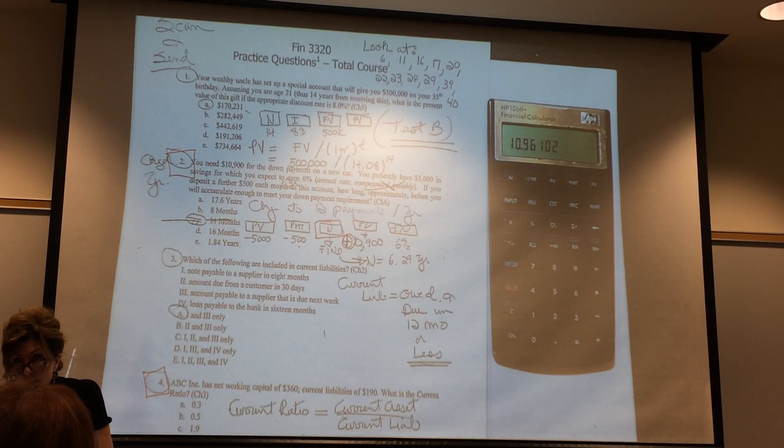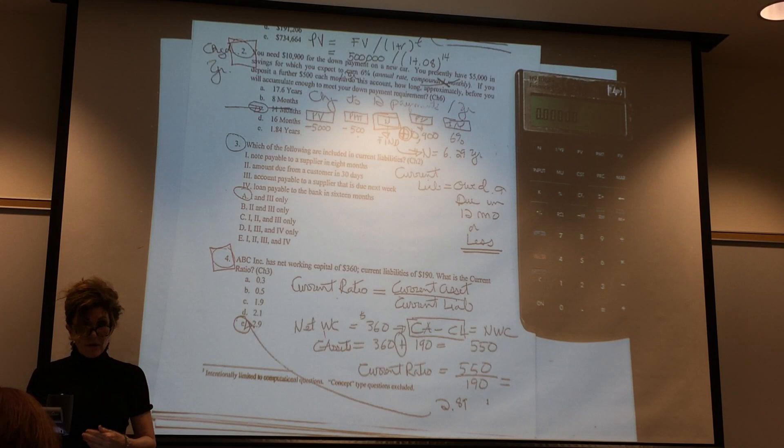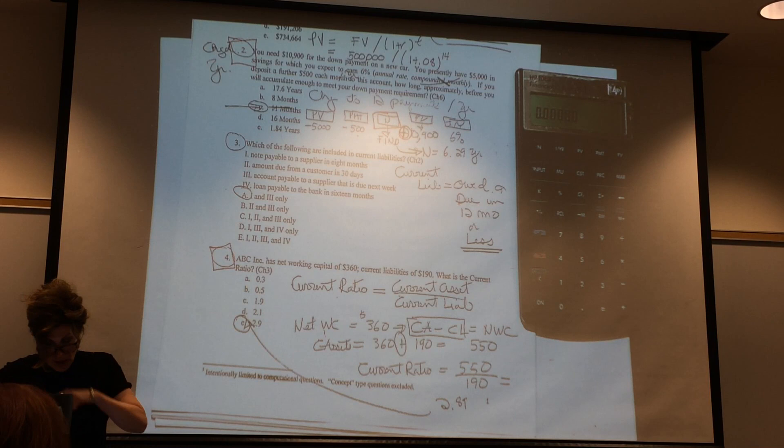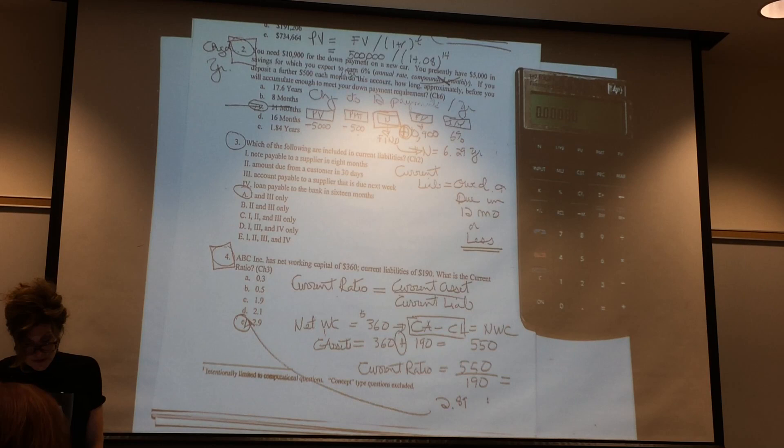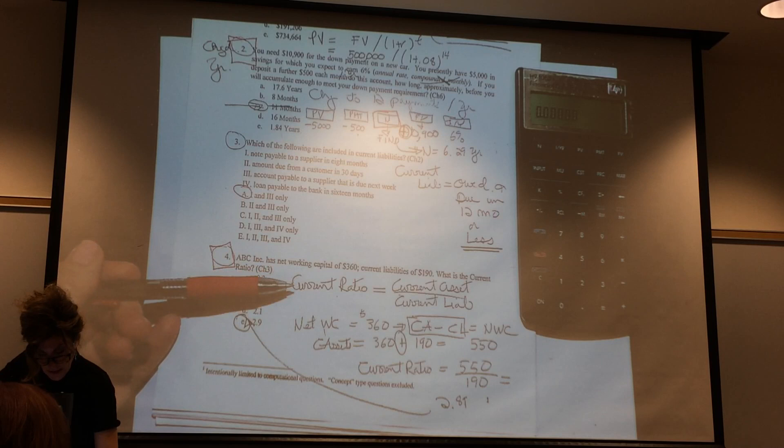You can do that, right? You can toggle back and forth between 12 payments or two payments per bond. By the way, I do have the ratios written down on the cards too, in terms of what you need to know, which relates to number 4 and number 3, but I'm going over number 4. ABC has working capital of $360, current liabilities of $190. What is the current ratio? You're going to have to know these ratios.